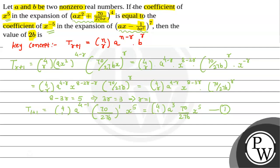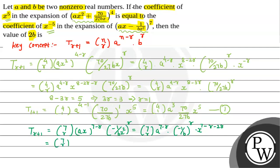For the second expansion, the general term is: t(r+1) = 7Cr × (ax)^(7−r) × (−1/bx²)^r. That equals 7Cr × a^(7−r) × x^(7−r) × (−1/b)^r × x^(−2r). Simplifying, that is 7Cr × a^(7−r) × (−1/b)^r × x^(7−3r).